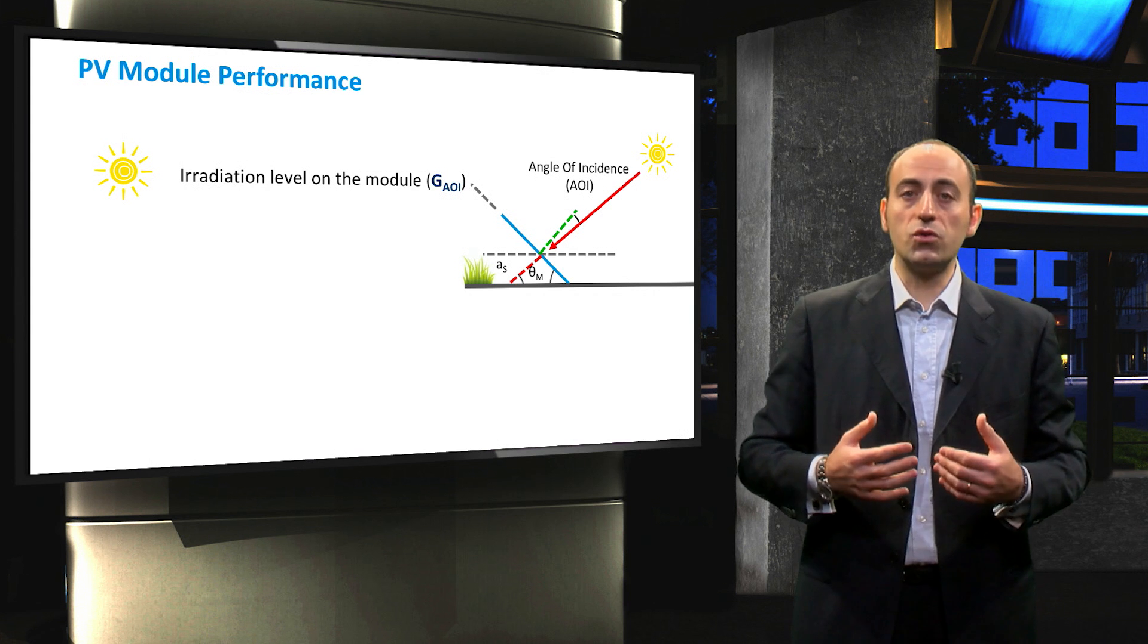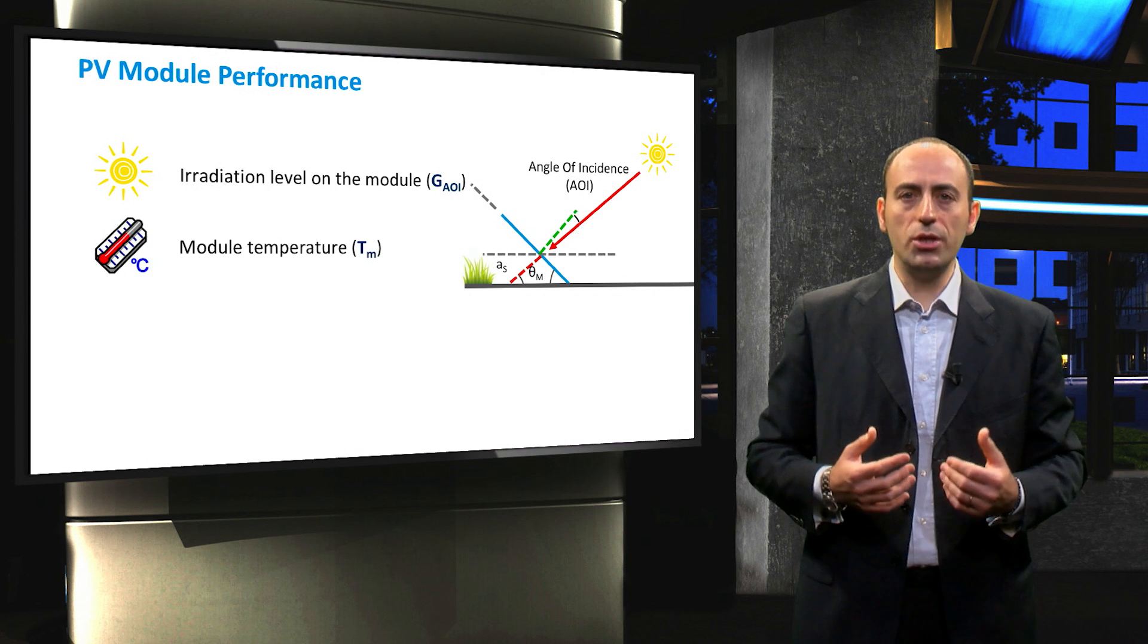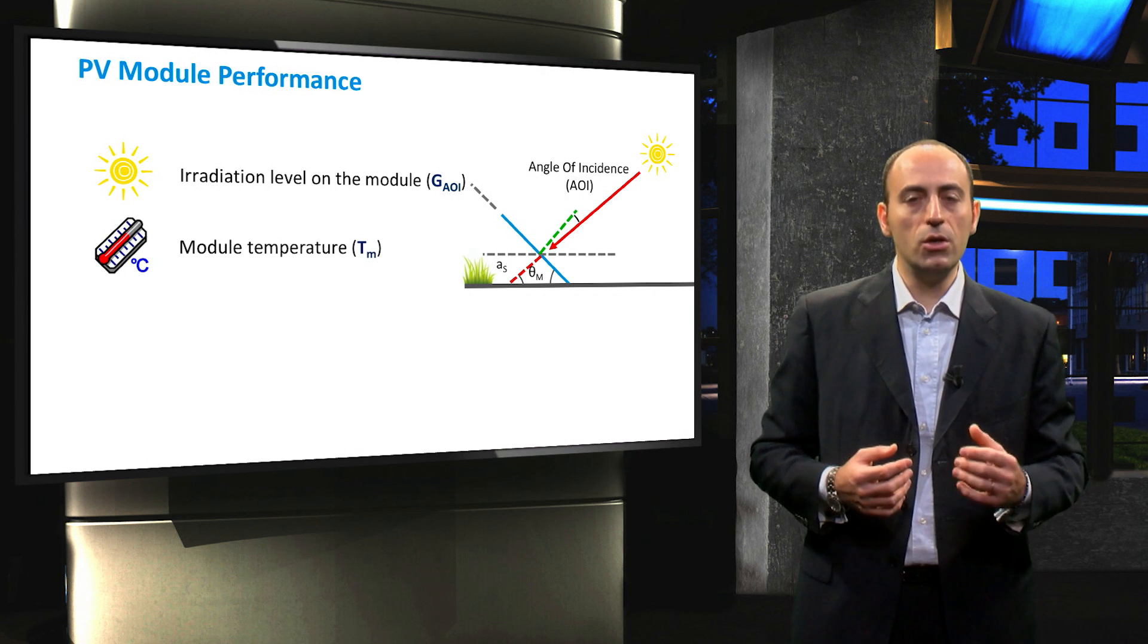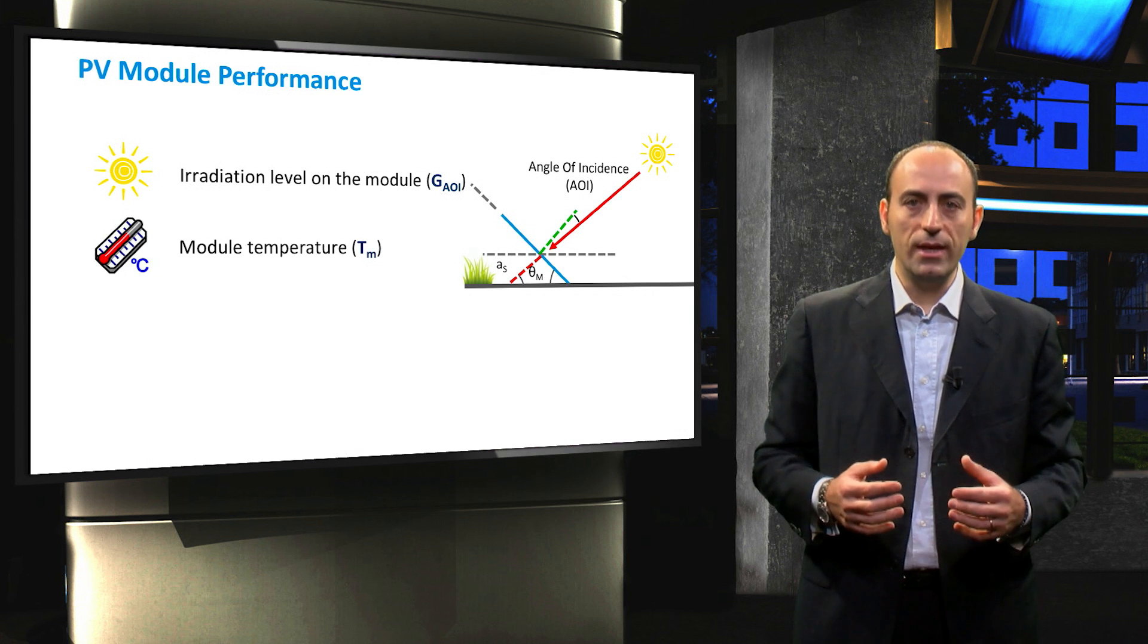Of course, the temperature also has a huge influence, and thus in the next video we will introduce three models to simulate it. Once we have these two data, we can derive the efficiency of the module as function of irradiance and temperature.